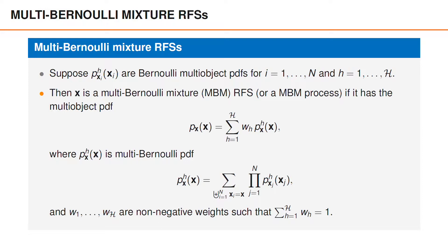Suppose we have capital H hypotheses and capital N Bernoulli components in each hypothesis and let P_H^i(x) denote the multi-object PDF of the ith Bernoulli component in hypothesis H. The random finite set, bold X, is then a multi-Bernoulli mixture random finite set, or an MBM process, if its multi-object PDF is a summation over H from 1 to capital H of the multi-Bernoulli PDFs P_X^H, weighted by the probabilities W_H.